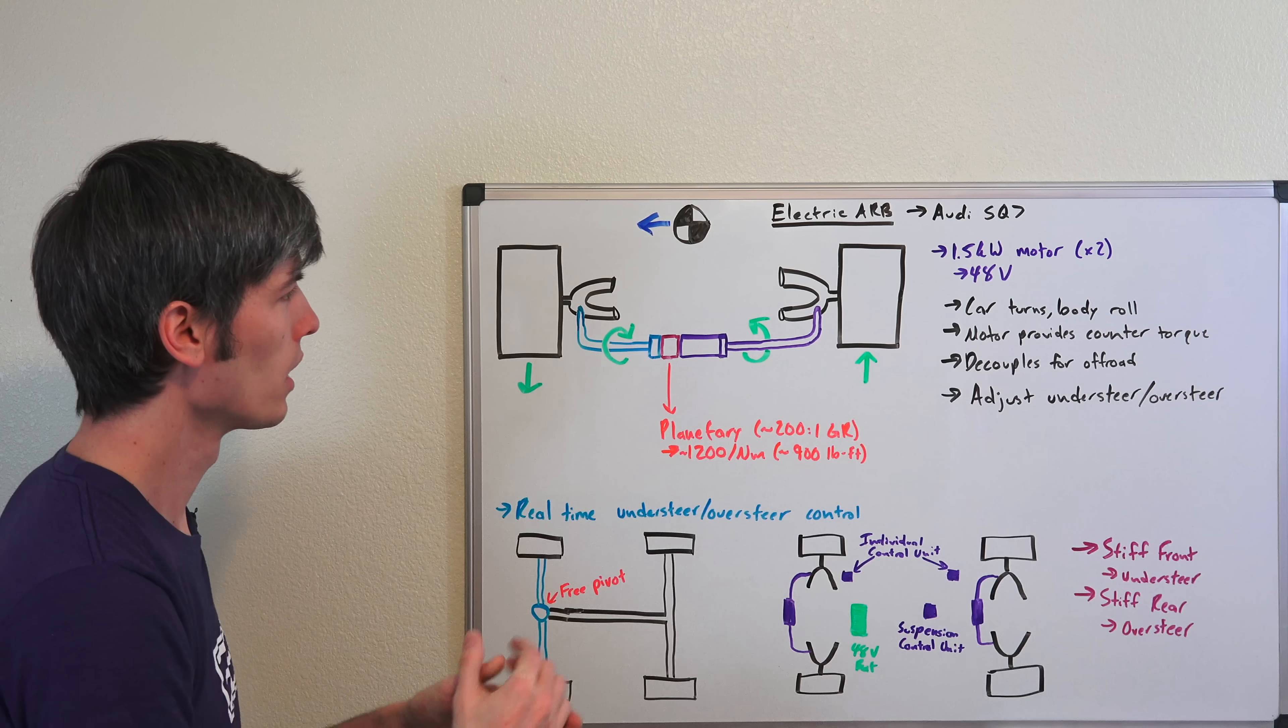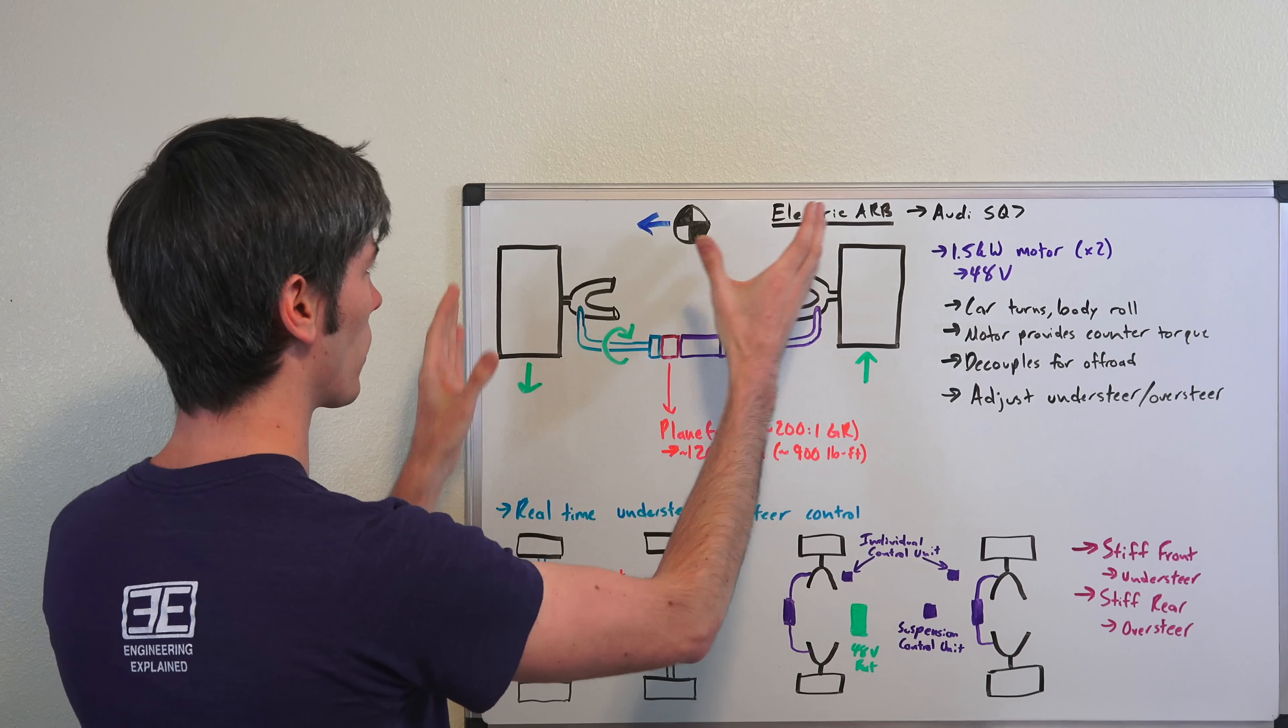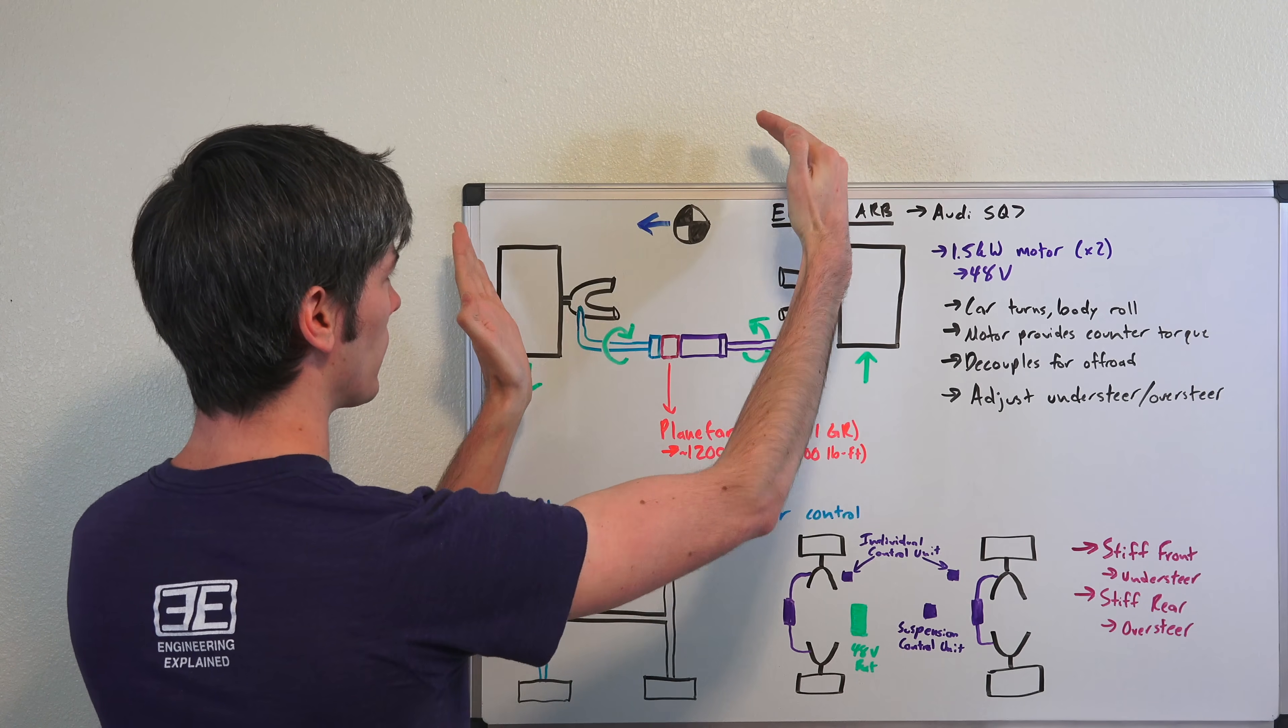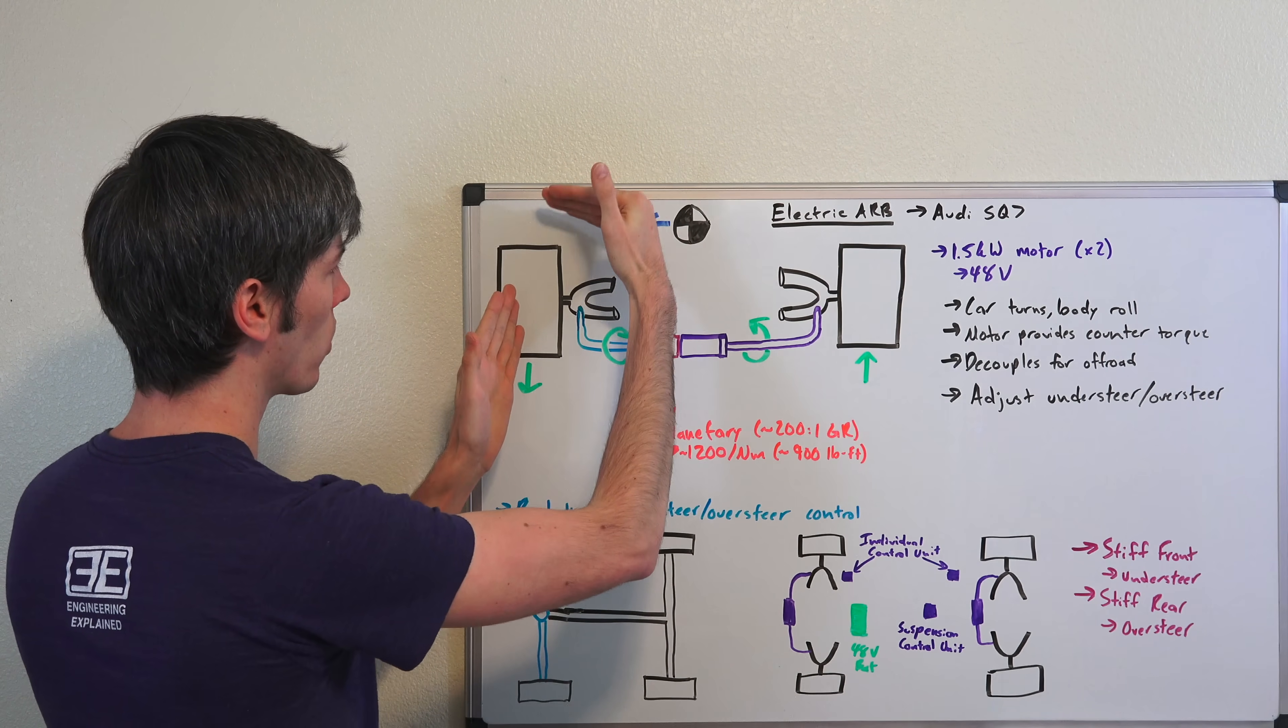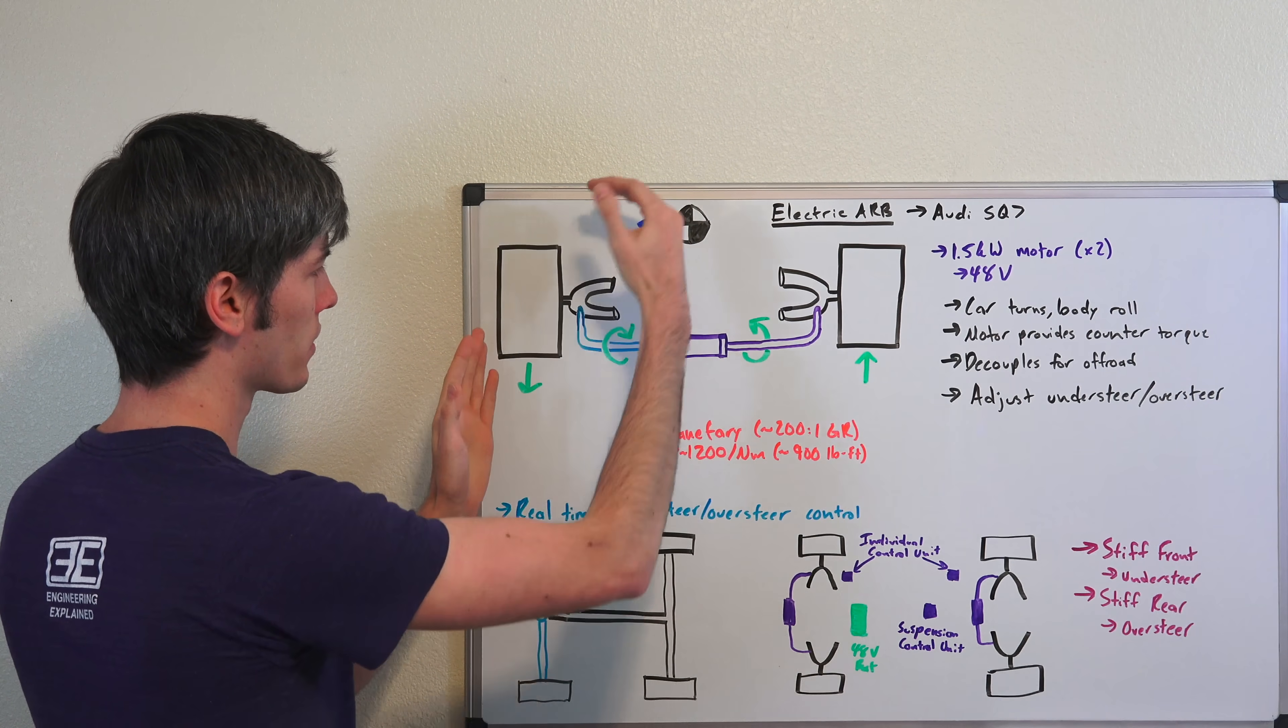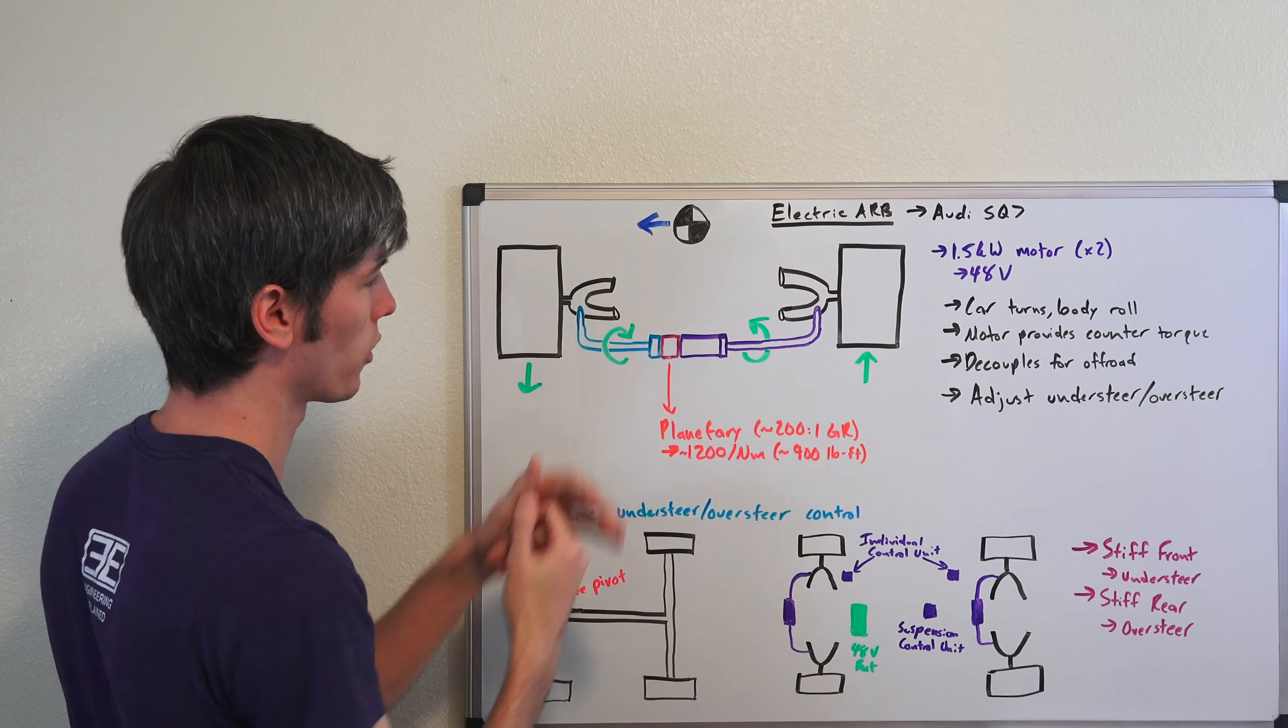So how does this work? Let's say you're going around a corner and your center of gravity is up here. It's leaning over to the left, so the body of the car wants to lean left. That means the body is compressing down on this side of the suspension and stretching out this side.